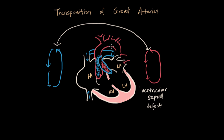Don't forget that newborns have a ductus arteriosus between the aorta and the pulmonary artery. In this case, it's also providing a way for the two loops to have some communication. However, we're still cyanotic because even at best, we only have a mixture of the two kinds of blood going out into the aorta — so the blood sent to the body is purple with some oxygen in it.